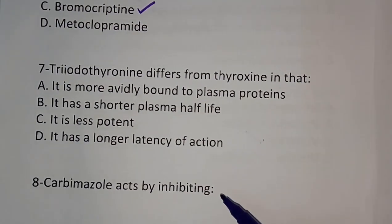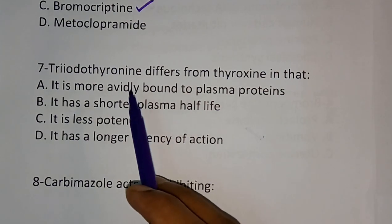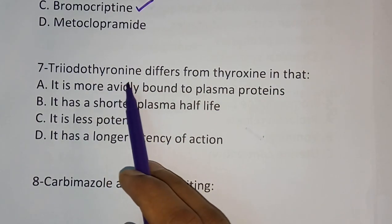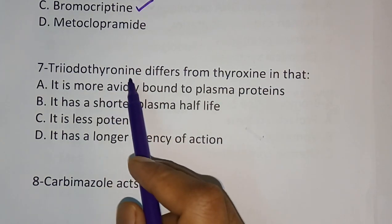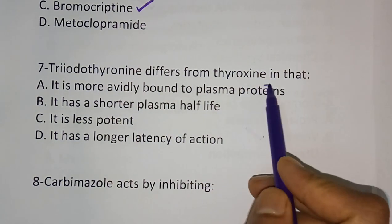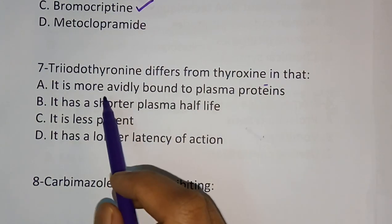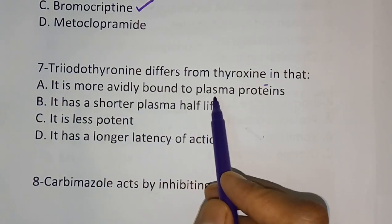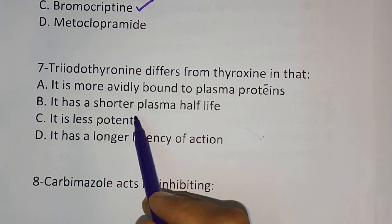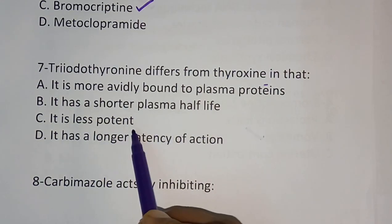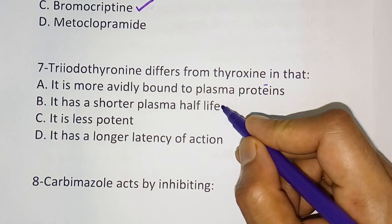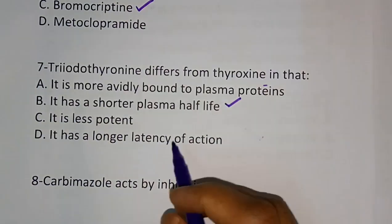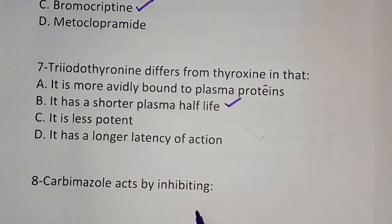Question number seven: Triiodothyronine differs from thyroxine in that — options are: it is more avidly bound to plasma protein, it has a shorter plasma half-life, it is less potent, or it has a longer latency of action. The correct answer is it has a shorter plasma half-life.